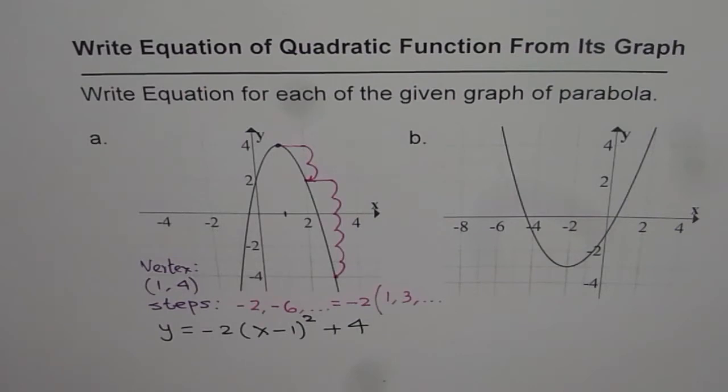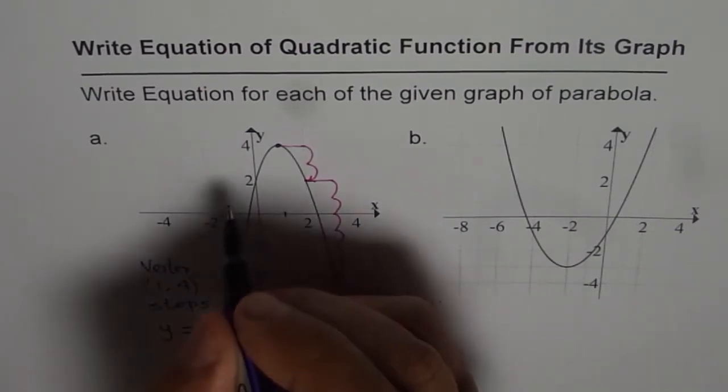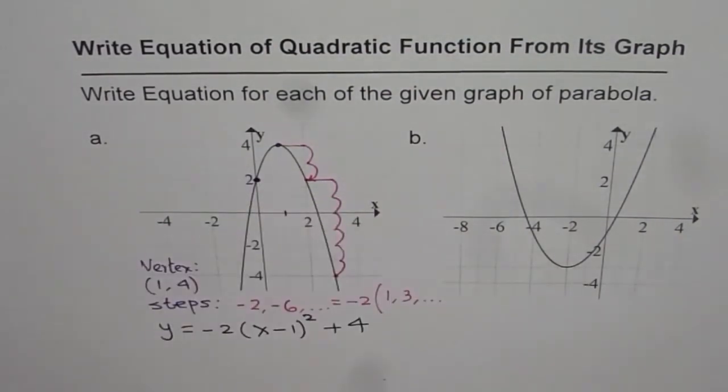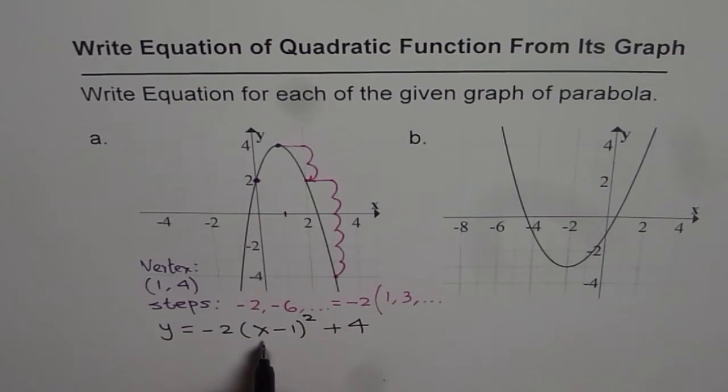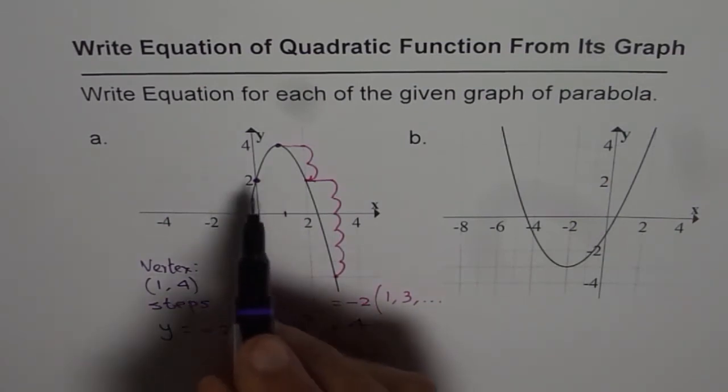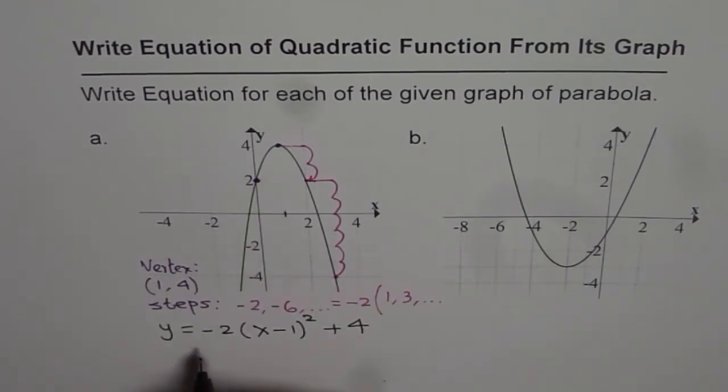Now, you can always check if this equation is right or not. To check, let us take this point. That is a y-intercept. So if I put x equals to 0, in that case, I should get y equals to 2. Let's figure it out.